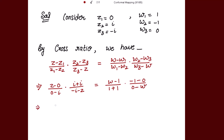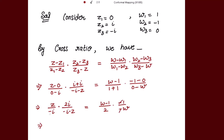Simplifying, we get z/(-i) · 2i/(-i - z) = (w - 1)/2 · (-1)/(-w). Canceling the negative signs and the i terms, we get 2z/(z + i) = (w - 1)/(2w).